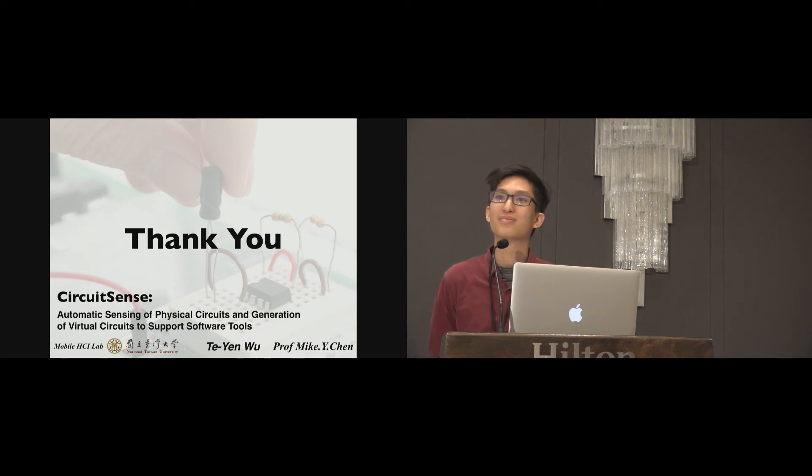Hi. My question would be how precisely can you detect the component? For example, if you detect that it's a transistor, can you actually detect the exact type of the transistor? Can you say that again? Can you actually detect the exact type of a transistor, of a diode? Oh, no. We cannot identify the different type of diode. But we know this is a diode. So we cannot identify the diode and the light emitting diode, LED. So we cannot identify this. Yeah. Okay. Thank you.